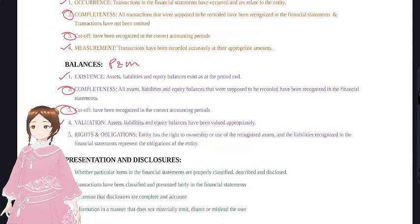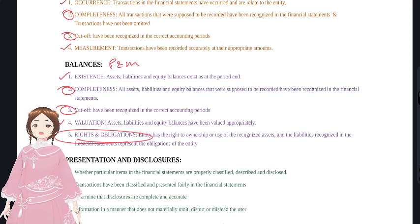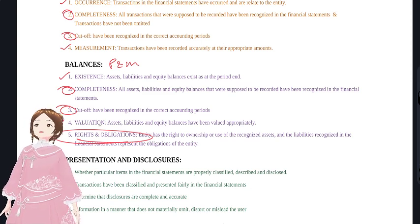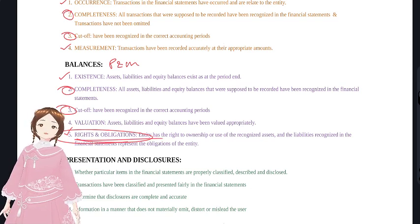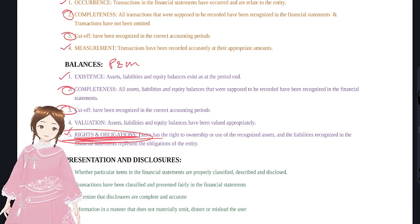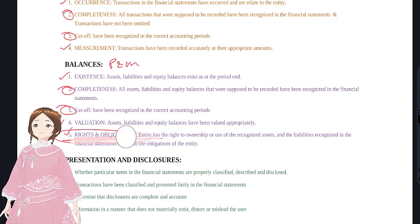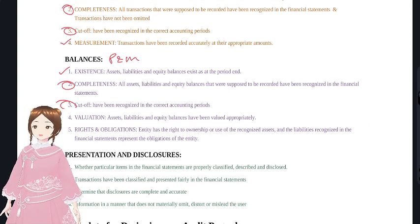One extra assertion for balances is rights and obligations. For inventory we have a right to something, and for liabilities we have an obligation to pay. Rights and obligations applies mostly to balance sheet items like plant and machinery, trade receivables, and trade payables.